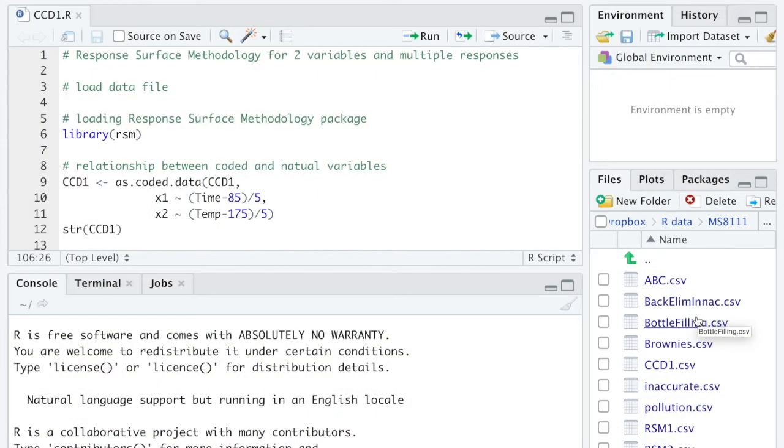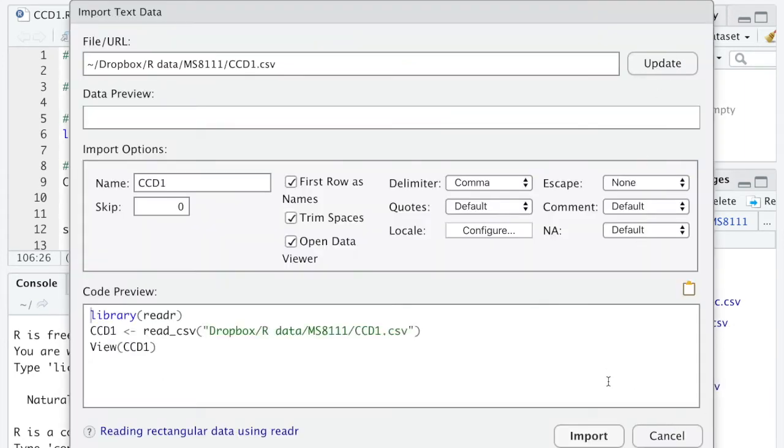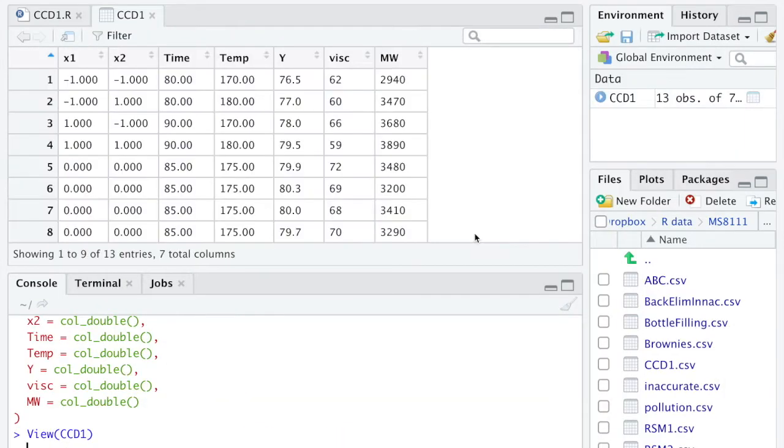Let's start our analysis by loading the data. The data file shows the coded variables x1 and x2, the natural variables time and temperature, the response y, the yield, and other two columns that we are not going to use right now.